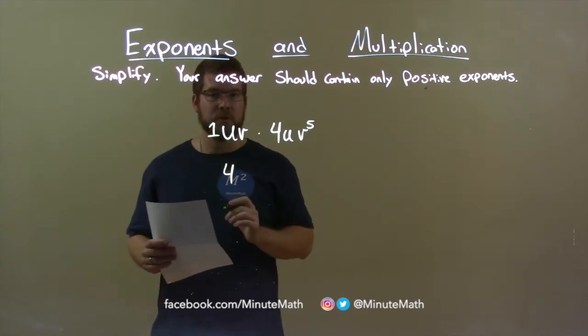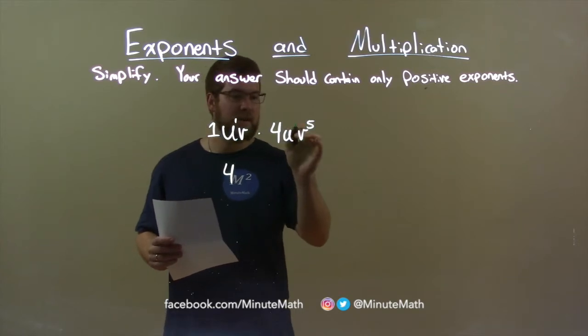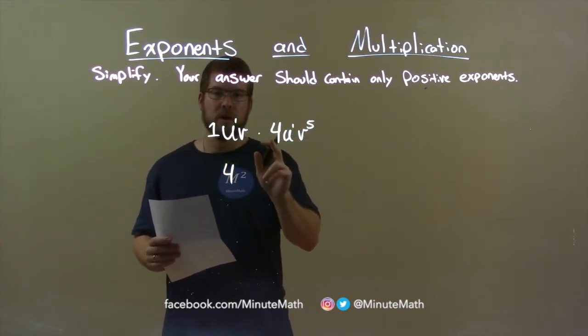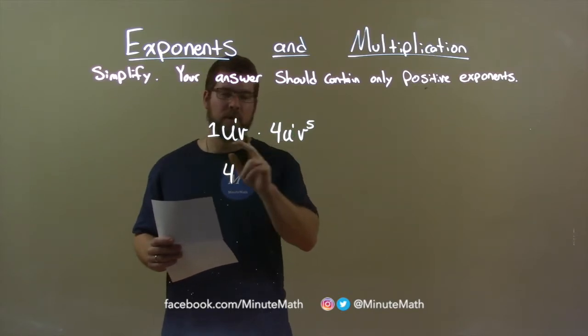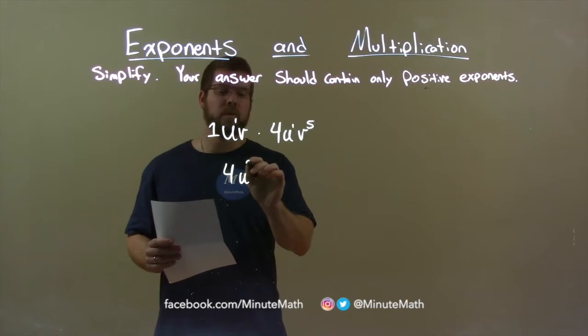Next, I see the variable u. And again, when u's by itself, or a variable by itself, we know it has the exponent of 1. And we see that here as well. u times u - a variable times itself - we add the exponents. Well, 1 plus 1 is 2.